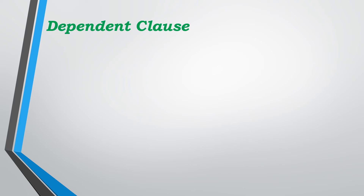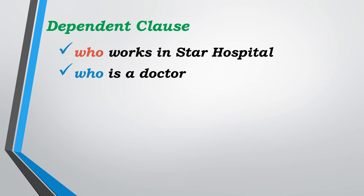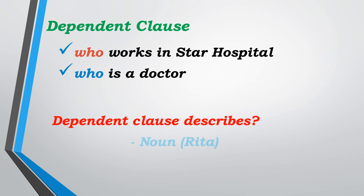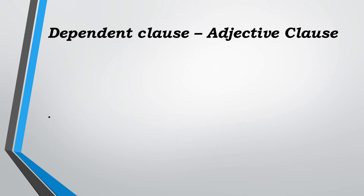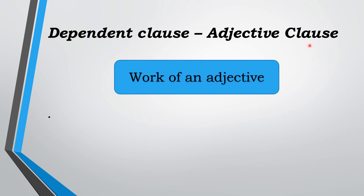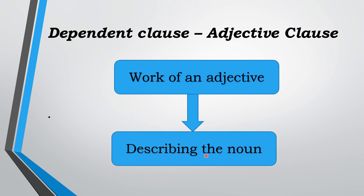The dependent clause is completely reliant upon the main clause to give meaning. So what is the purpose of the dependent clause? The dependent clause — like 'who works in Star Hospital' and 'who is a doctor' — describes the noun Rita. An adjective will always describe the noun. So here the dependent clause is also describing the noun Rita. Therefore, the dependent clause is also called an adjective clause, because it does the work of an adjective — by describing the noun.